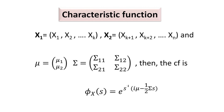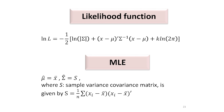The characteristic function of the multivariate normal distribution is given by phi_x(s) = exp(s'*i*mu - (1/2)*s'*sigma*s). We can write down the likelihood function and find the maximum likelihood estimators of the mean vector mu and dispersion matrix sigma. The MLEs are: mu-hat equals the sample mean vector and sigma-hat equals the sample variance-covariance matrix.